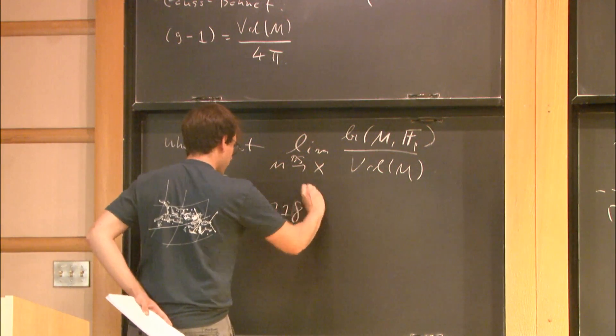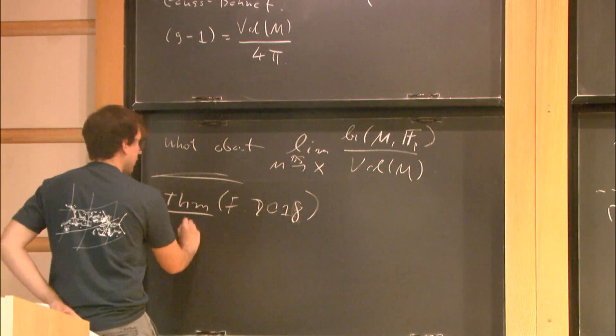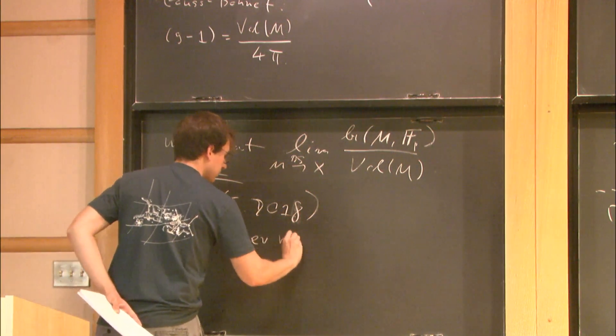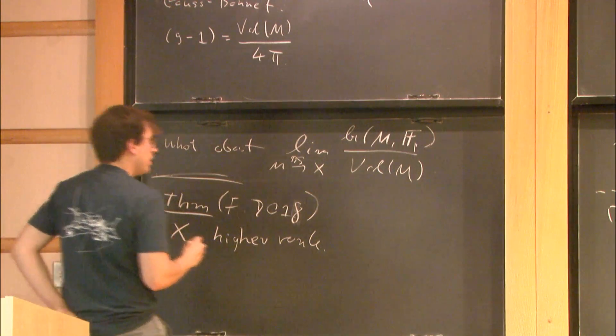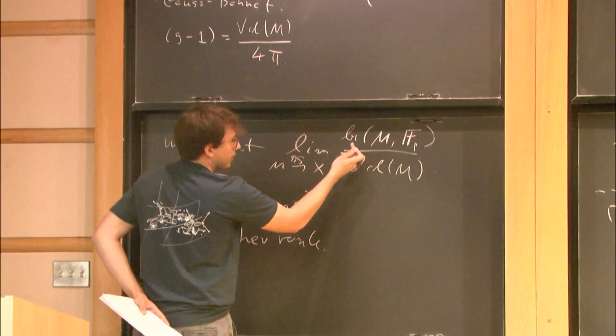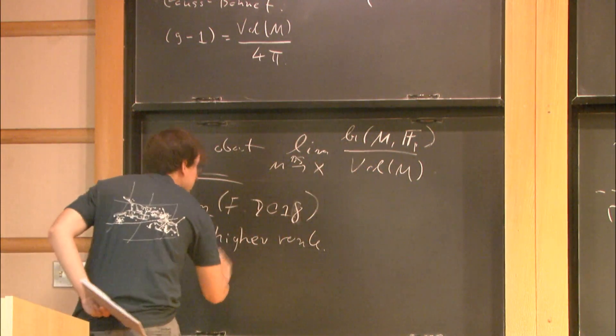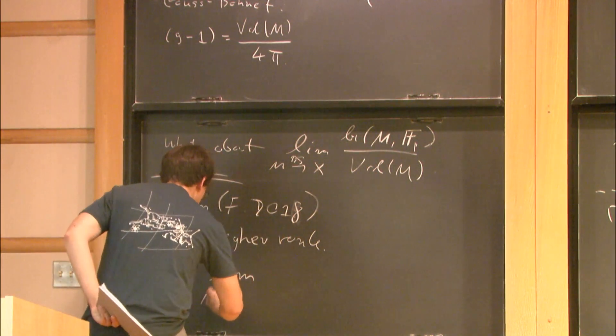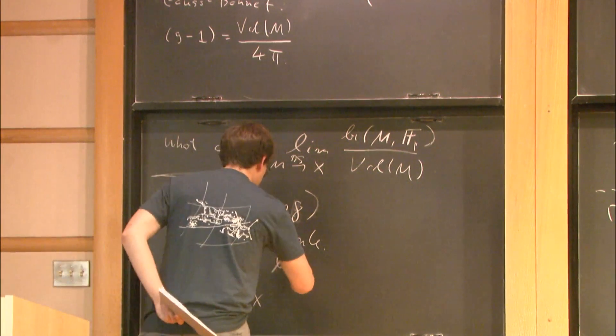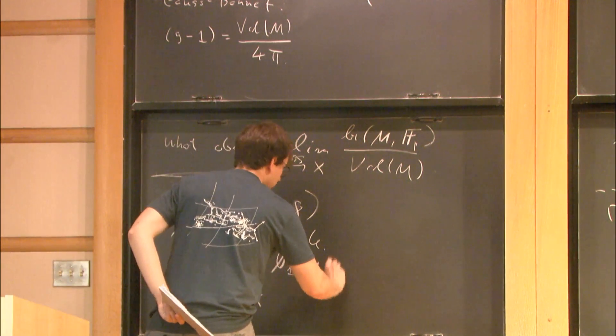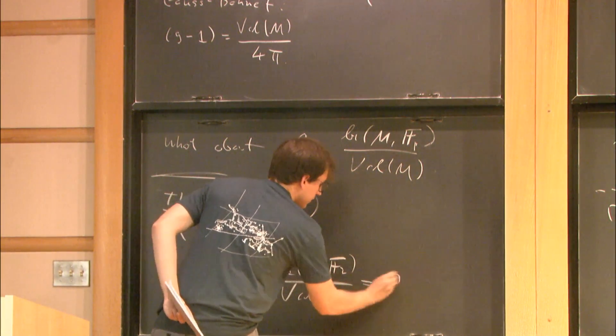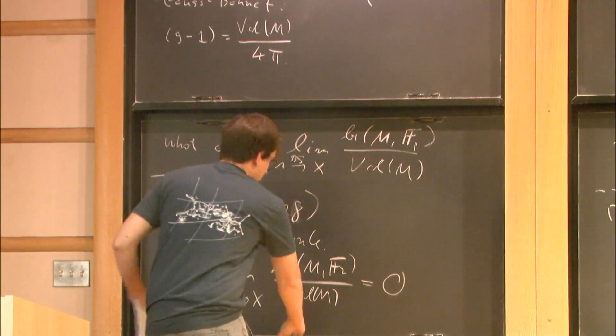I'll just maybe start by stating the result. The result says that if X is higher rank, and we look at first Betti number over F2, then this limit is zero. So, limit as M converges Benjamin-Schramm to X of first Betti number with coefficients in F2 divided by volume, this is zero.